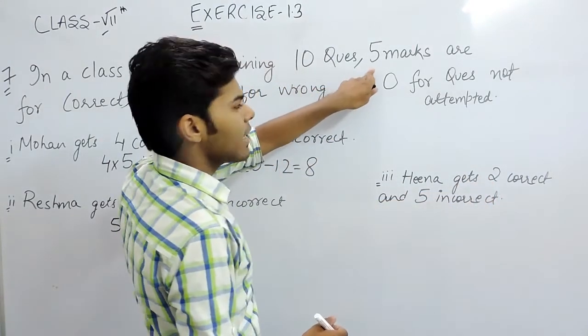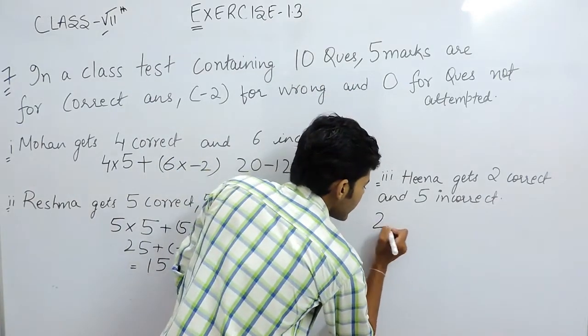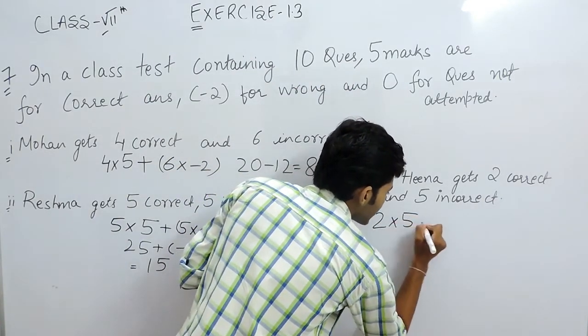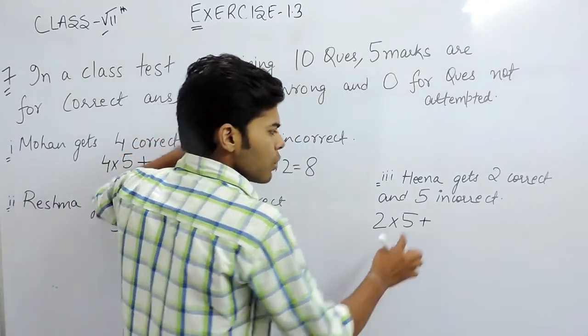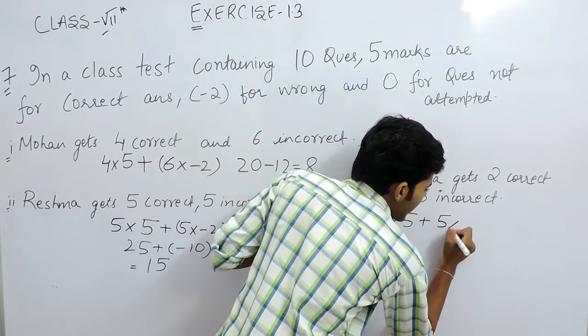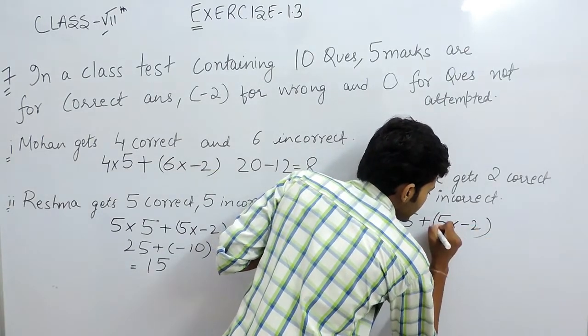Hina gets 2 correct and 5 incorrect. So 2 correct means 1 correct gives 5 marks, so 2 will give 2 multiplied by 5. Then we will add 5 incorrect. For 1 incorrect, we will take 5 multiplied by minus 2.